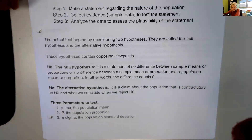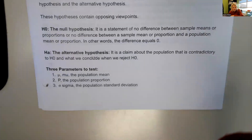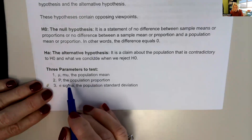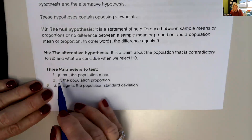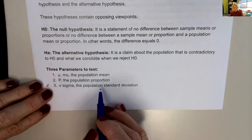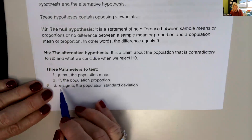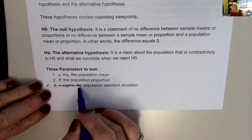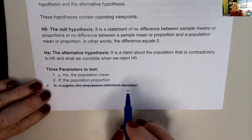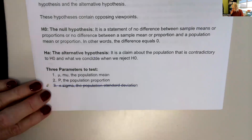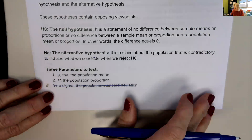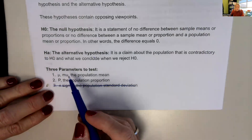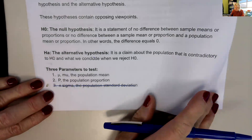There are three parameters that we can be testing: the population mean, mu; the population proportion, P; or the population standard deviation, sigma. We are not going to be testing the standard deviation this semester. We're only going to be focusing on testing the population mean and the population proportion.